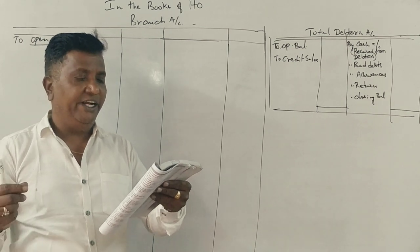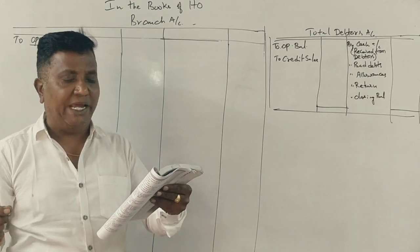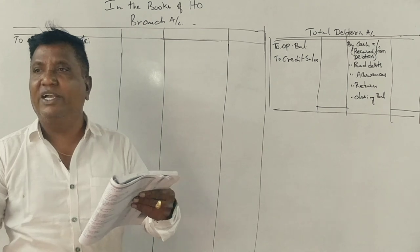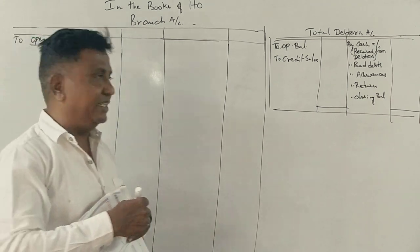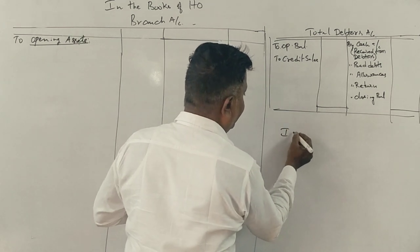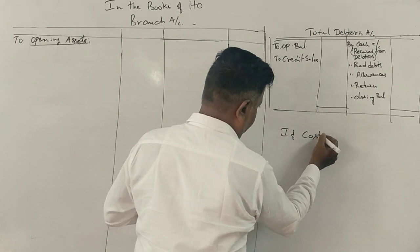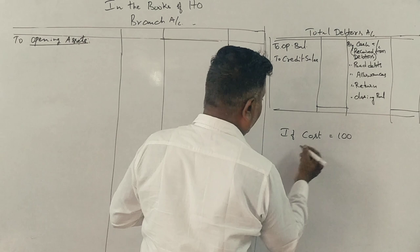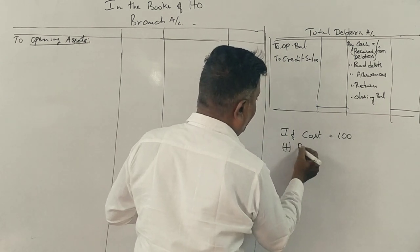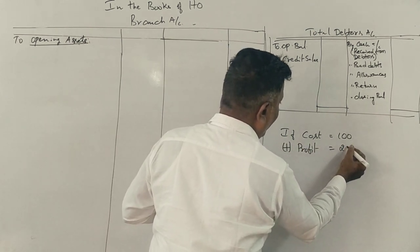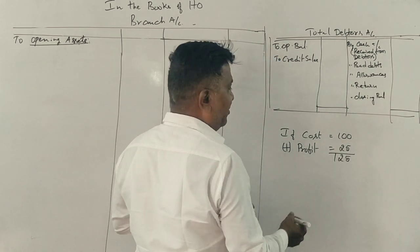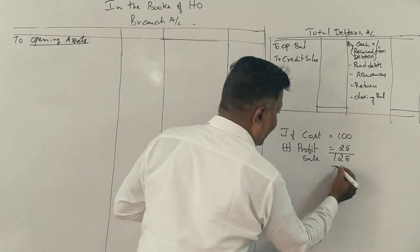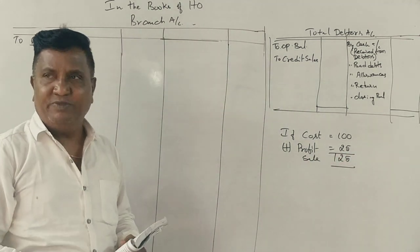The head office supplied the goods to branch at cost plus 25%. If cost is 100, your profit will be how much? How much do you sell? 125. Yes or no? Correct.